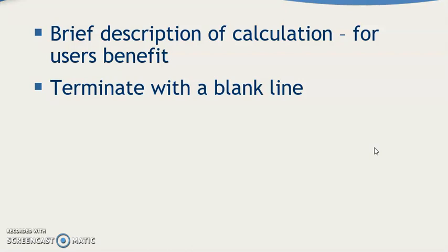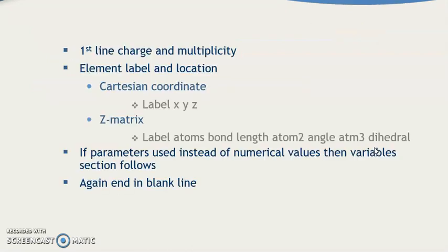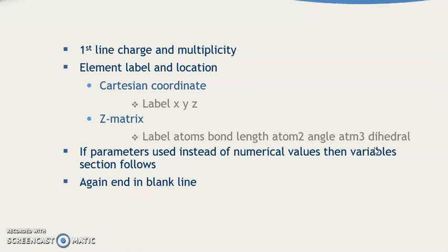Now a brief description of calculations for user benefit, terminated with a blank line. The molecular specification section contains: charge and multiplicity on the first line, then element, layer, and location. For Cartesian coordinates: level, x, y, z. For Z-matrix: level, atom, bond length, atom 2, angles, atom 3, and dihedral angles. If parameters are used instead of numerical values, a variable section follows, again ending with a blank line.